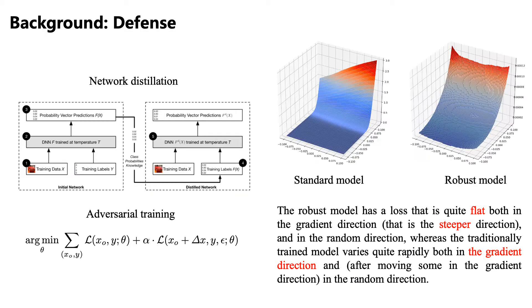Background: Defense. Defense methods such as network distillation and adversarial training aim at constructing a robust model. The robust model has a loss that is quite flat both in the gradient direction and in the random direction, whereas the traditionally trained model varies quite rapidly in both the gradient direction and the random direction.